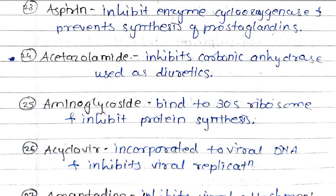Acetazolamide inhibits carbonic anhydrase enzyme and is used as a diuretic. Aminoglycosides bind to the 30S ribosome and inhibit protein synthesis, similar to tetracycline, while erythromycin attaches to the 50S ribosome.